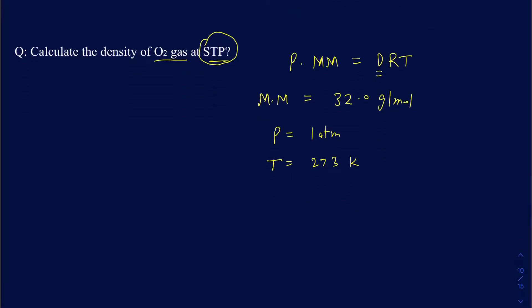You may be seeing books using 273.15 Kelvin. That's fine as well, but it doesn't really make a big difference in the calculations. So when you look to find the density, if I rearrange this equation, it's going to become pressure times the molar mass divided by RT.